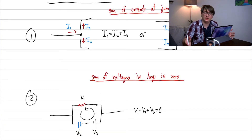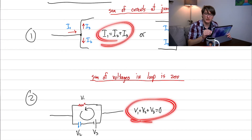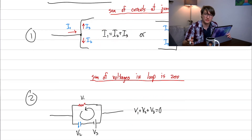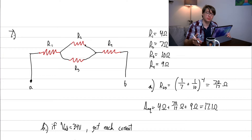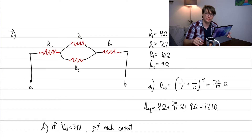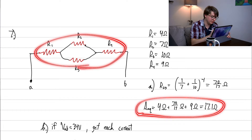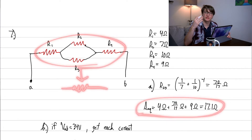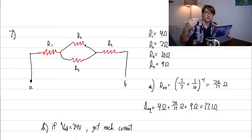Both of these laws are incredibly helpful for problem solving — we'll use them all the time. Let's do an equivalent resistor problem. We have a bunch of resistors in some combination of parallel and series, and we want to find the single equivalent resistance we can replace them all with.